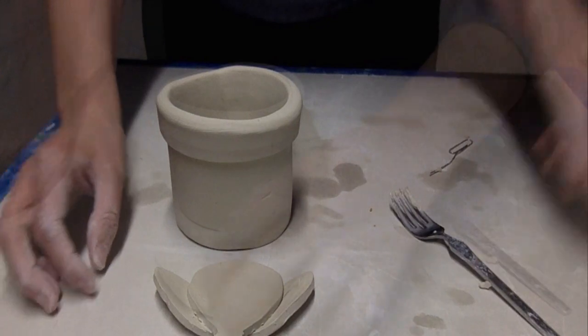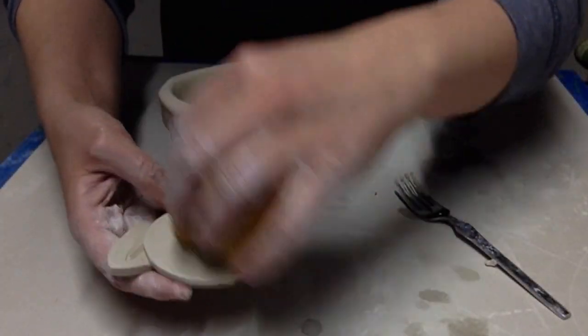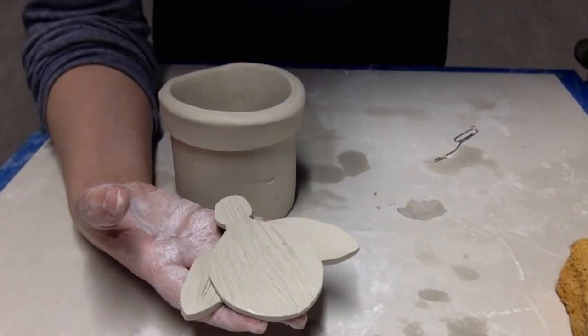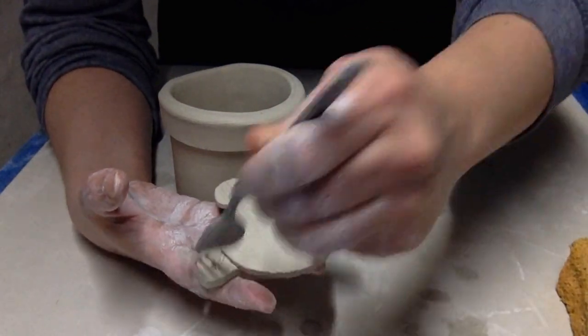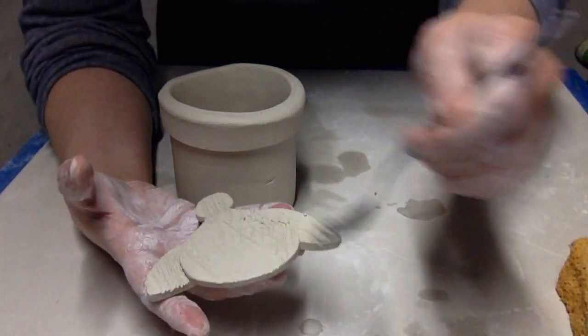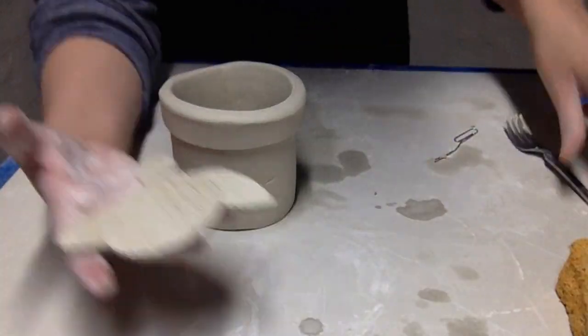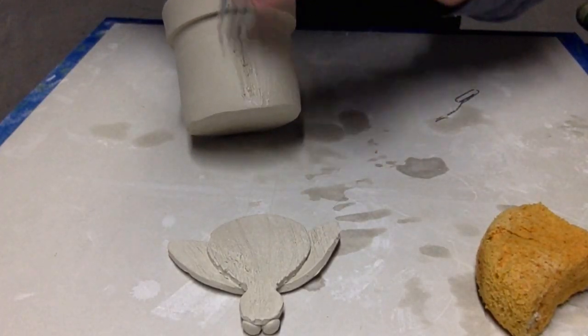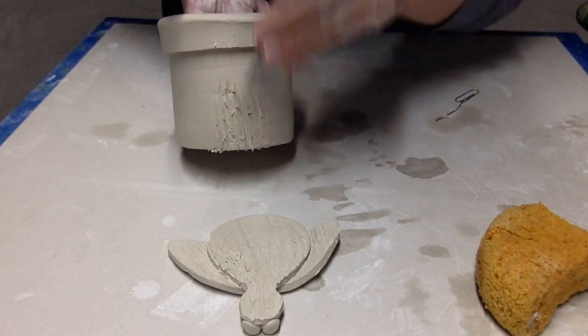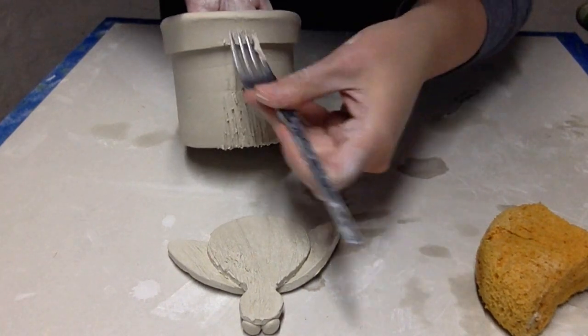So I'm going to add some water via the sponge to the back and then score the whole back of the bee, including the wings, because the wings will eventually touch the sides of the planter as well. Then using your fork again, score the planter everywhere that you think the bee will touch.